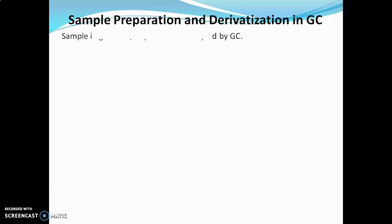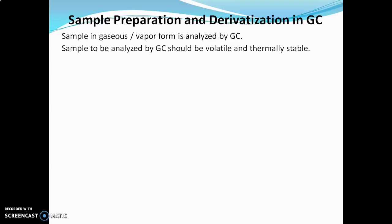Sample preparation and sample derivatization in GC. Sample in gaseous or vapor form is analyzed by GC. The sample which is to be analyzed must be in gaseous or vapor form. To convert a solid or liquid into gaseous form, it must be volatile and thermally stable. Volatility and thermal stability of the sample are two very important properties in GC analysis.